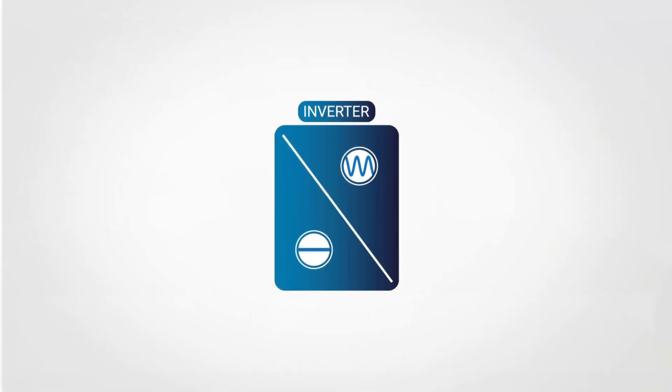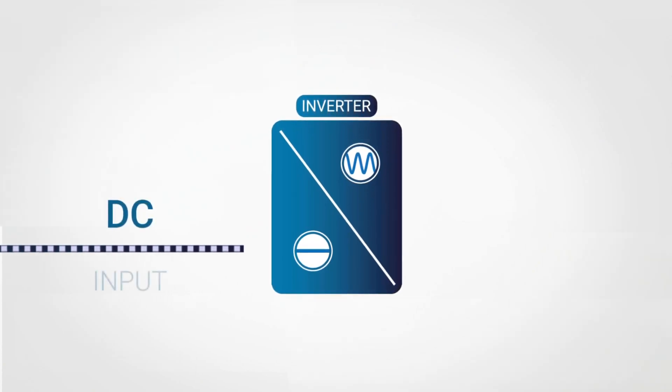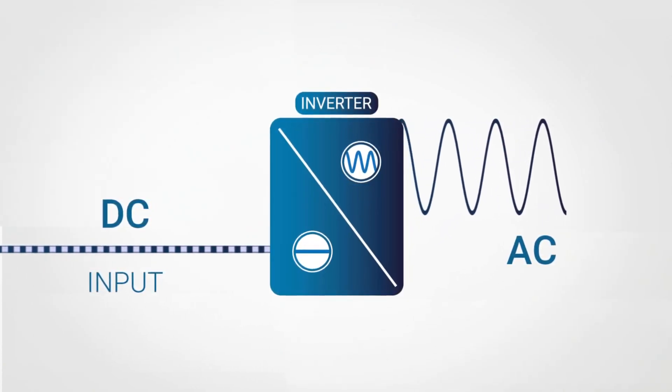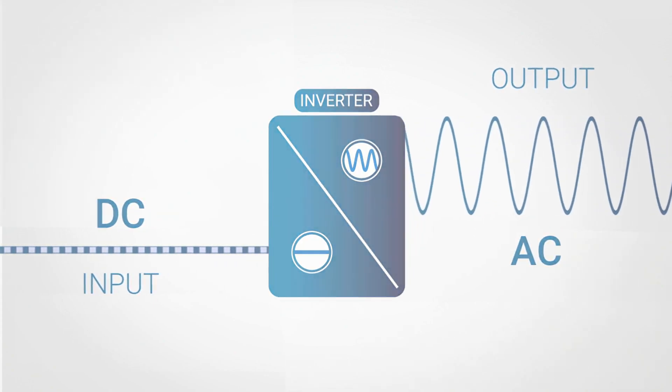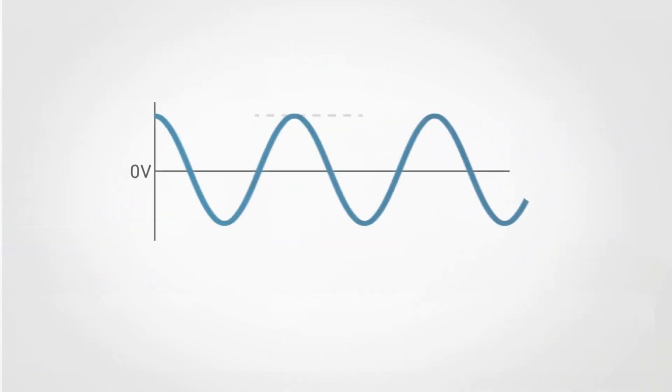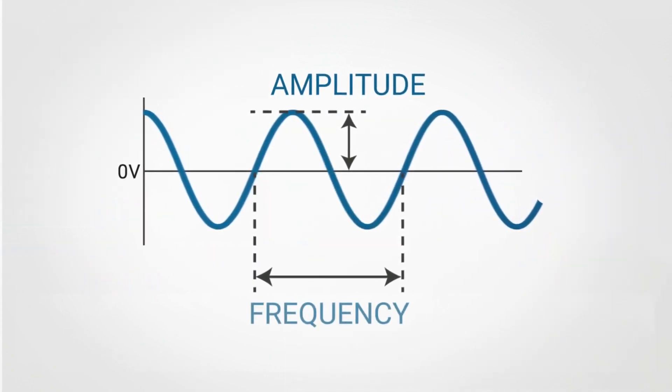In electronics, the inverter is an electronic input-output device that can convert direct current as input into alternating current as output and change its amplitude and frequency parameters.